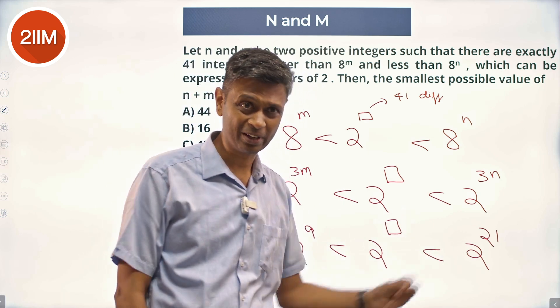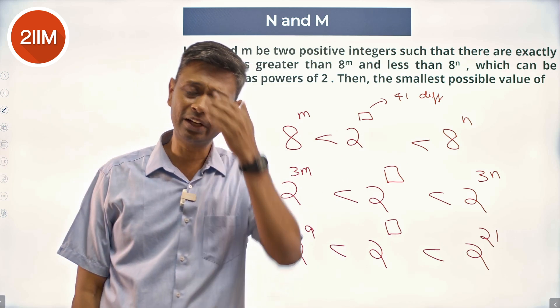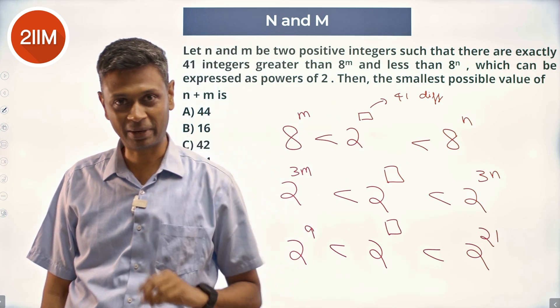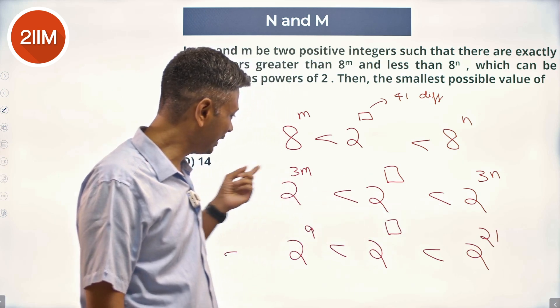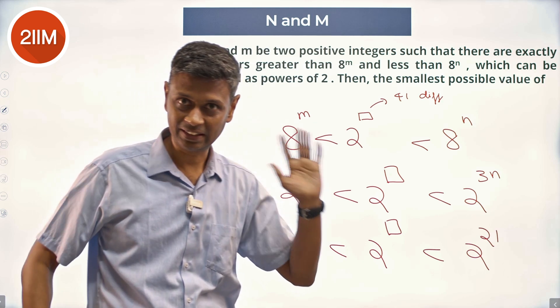So it is a very important adjustment, because otherwise this 41 won't come. When I did this question, I did 3n minus 3m and said 3 times n minus m, how is it going to be 41? It's not 3 times n minus m, it is 3n minus 3m minus 1, because it is in between - greater than this and less than that.